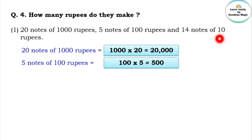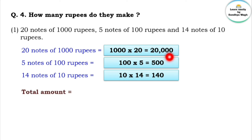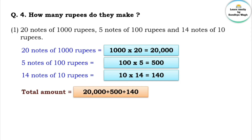For 14 notes of 10 rupees, we multiply 10 by 14, which gives us 140. The total amount is 20,000 plus 500 plus 140, which equals 20,640.